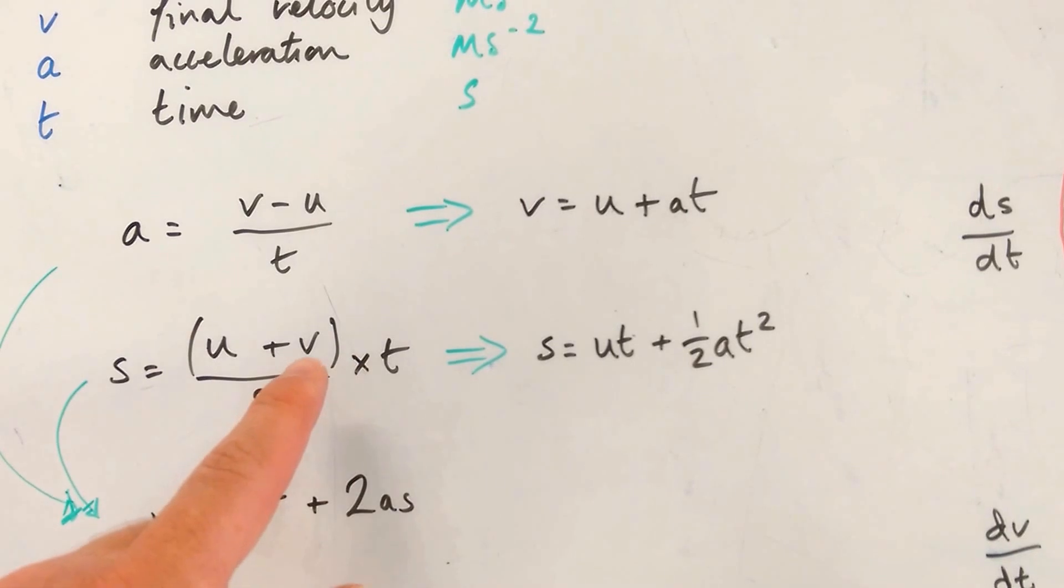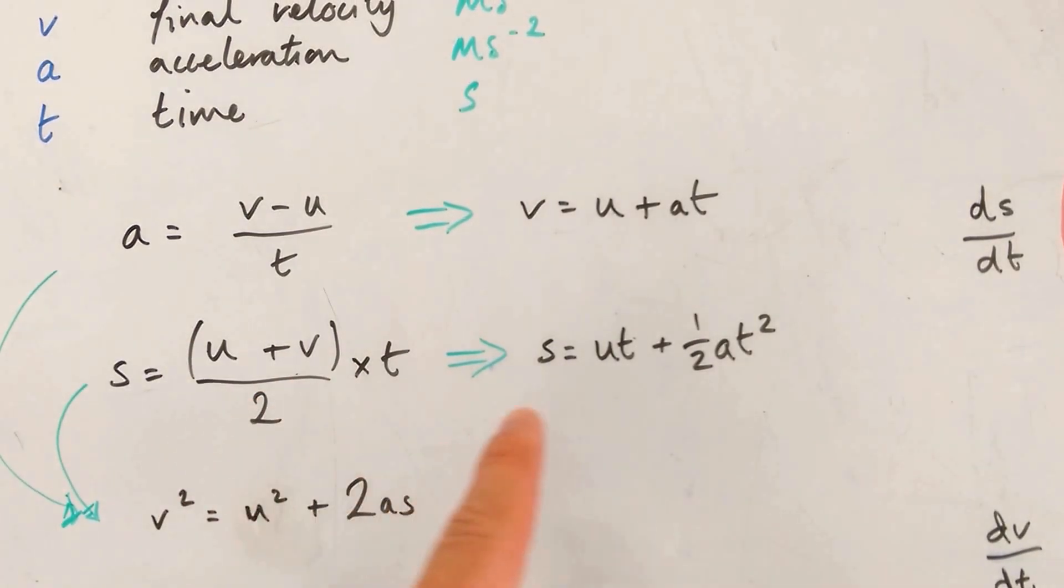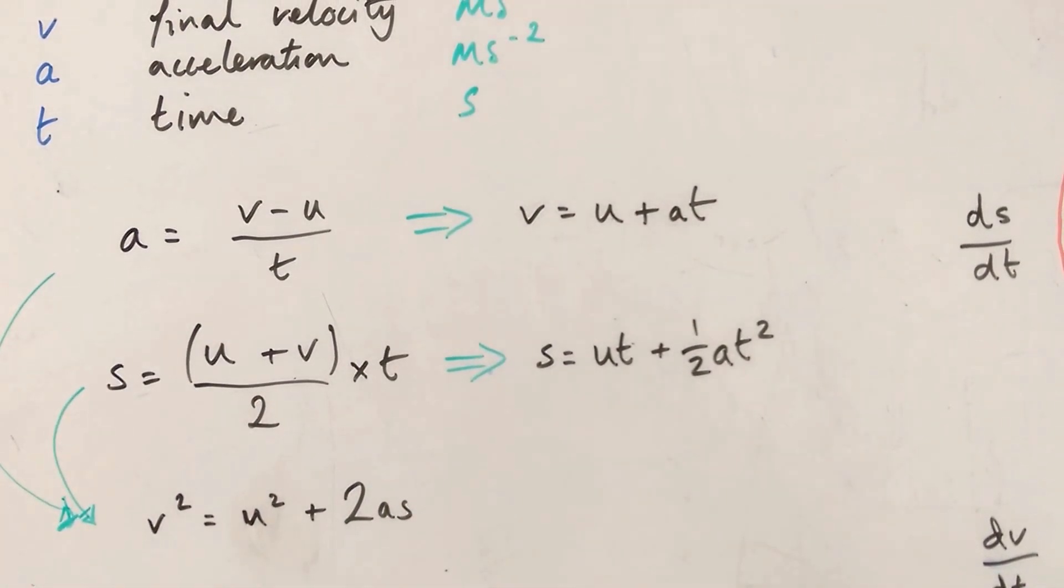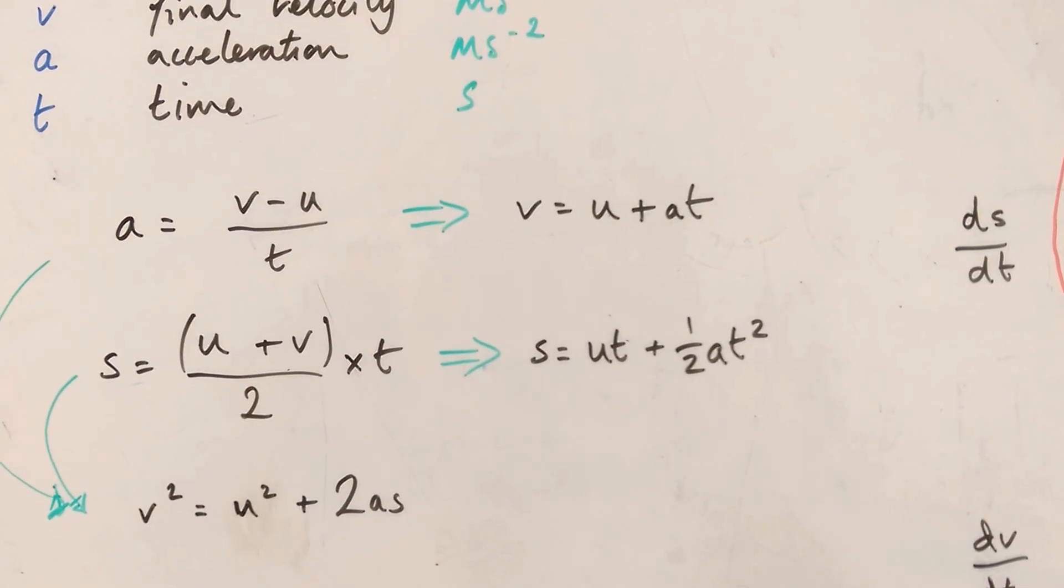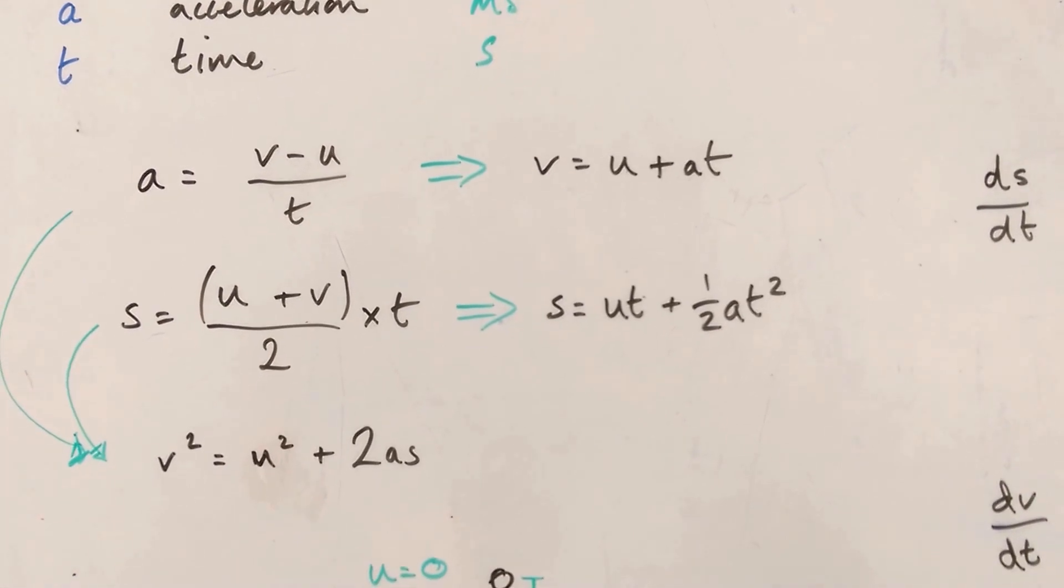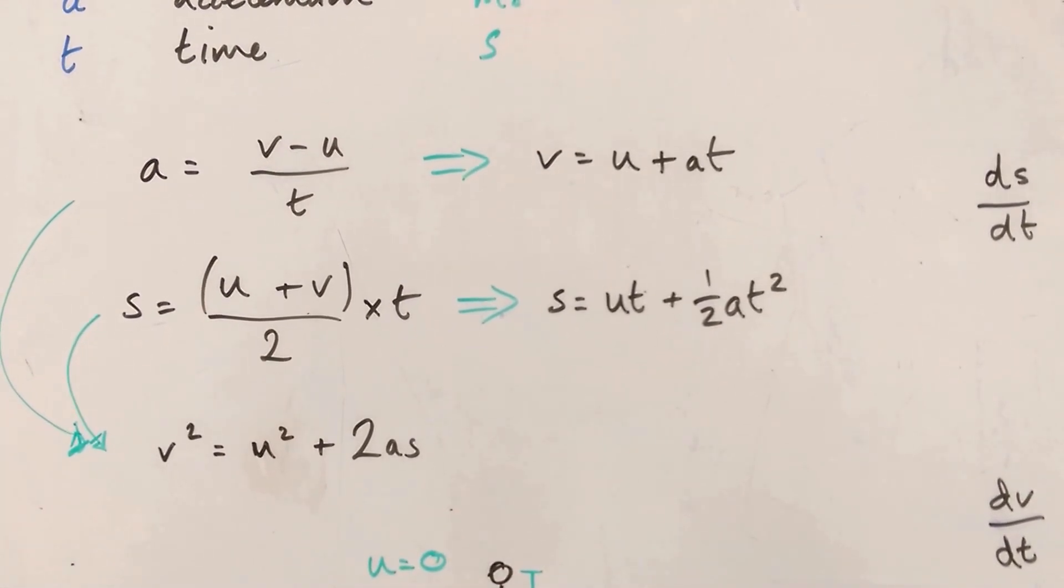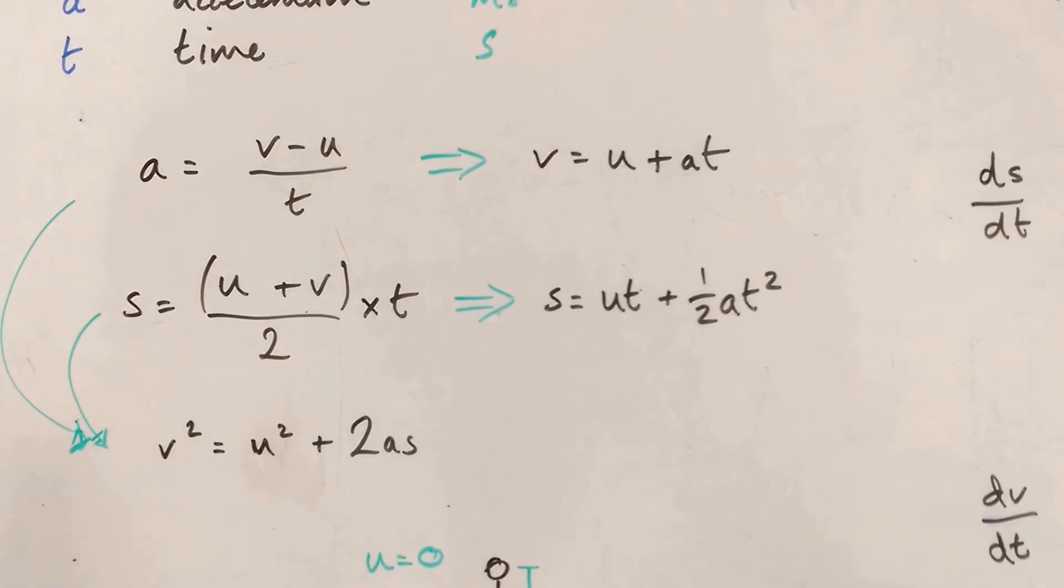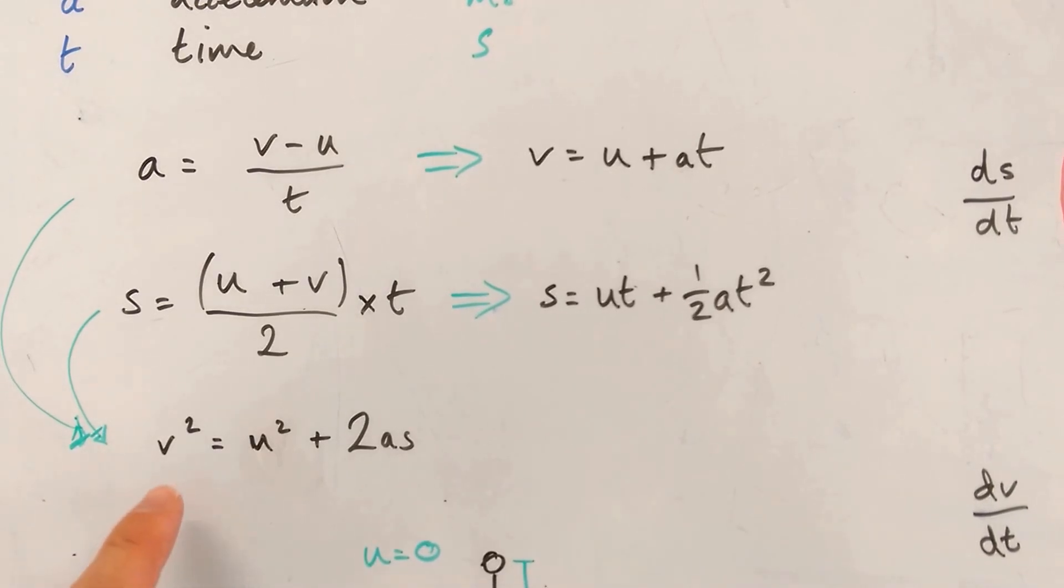So you're putting this equation in here instead of v. Then expand it out. You can get to this second equation, s equals ut plus a half at squared. The last one is actually a derivation using both of them. If you do that, you can get to a quadratic, which is v squared equals u squared plus 2as.